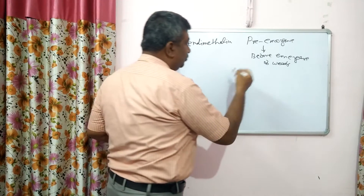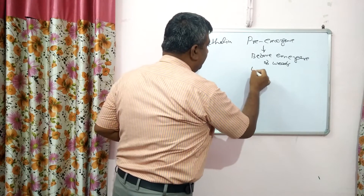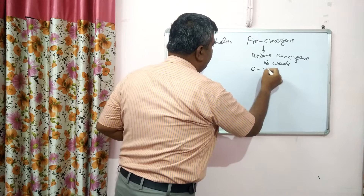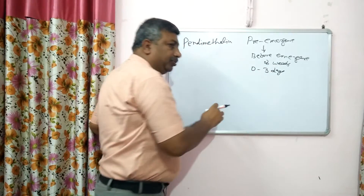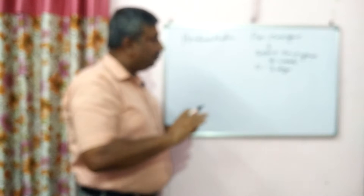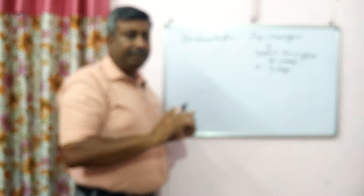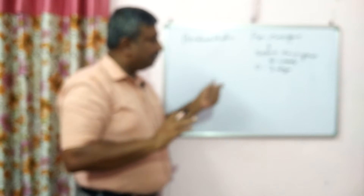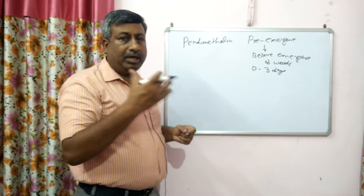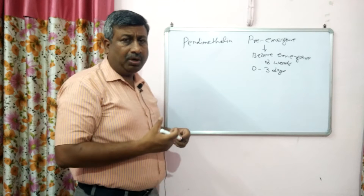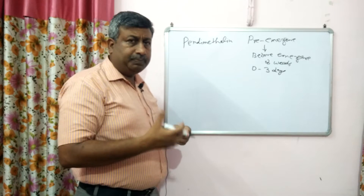It is applied after sowing. We can apply it from 0 to 3 days after sowing — ideally just after sowing, but it can be applied up to 3 days after sowing. So how do we calculate the dose of pendimethalin?